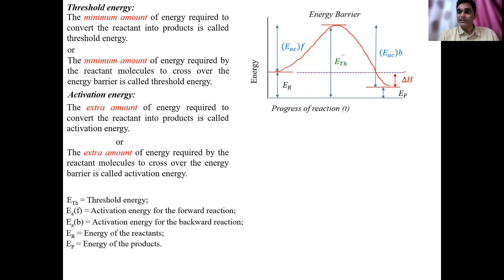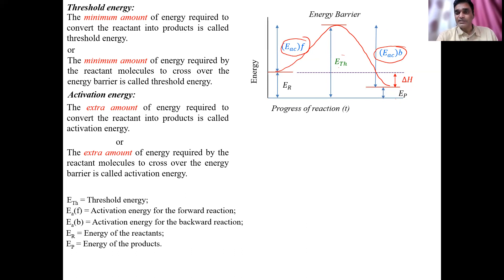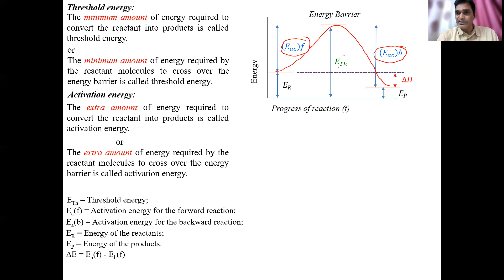Delta H can be calculated in two ways. Delta H (or delta E) is equal to the activation energy of the forward direction minus the activation energy of the backward direction. So: delta H = E_A(f) − E_A(b). This is also called the enthalpy change.